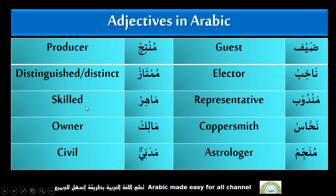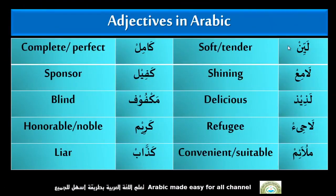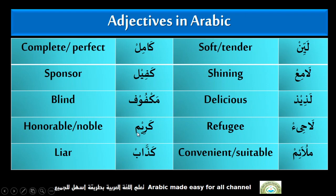Mahir — Skilled. Malik — Honor. Madaniun — Civil. Layin — Soft, Tender. Lame — Shining. Laziz — Delicious. Lajiun — Refugee. Mulaim — Convenient, Suitable. Kamil — Complete, Perfect. Kafil — Sponsor. Makfoof — Blind. Karim — Noble, Honorable.